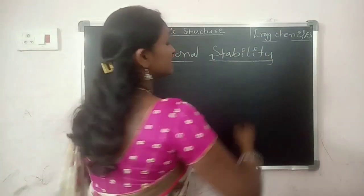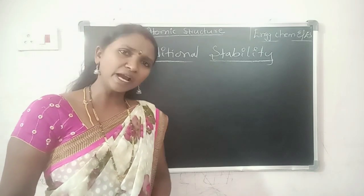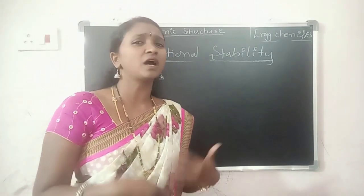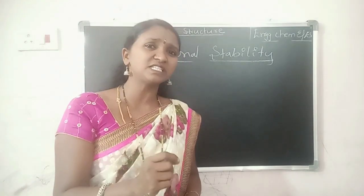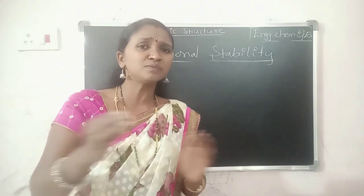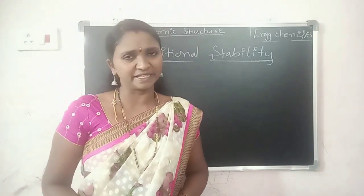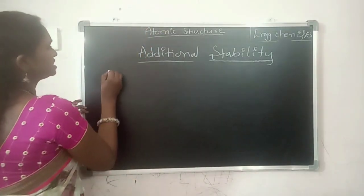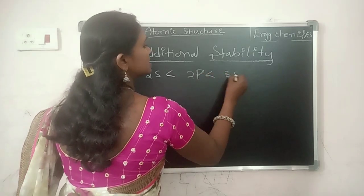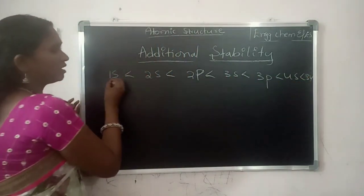So what is additional stability? Generally, the arrangement of electrons into orbitals according to their energies is according to the Aufbau Principle. According to the Aufbau Principle, electrons fill orbitals in order — the orbital with lowest energy must be filled first. The arrangement of electrons in increasing order of their energies is: 1s, 2s, 2p, 3s, 3p, 4s, 3d, etc. This is the order of energies.